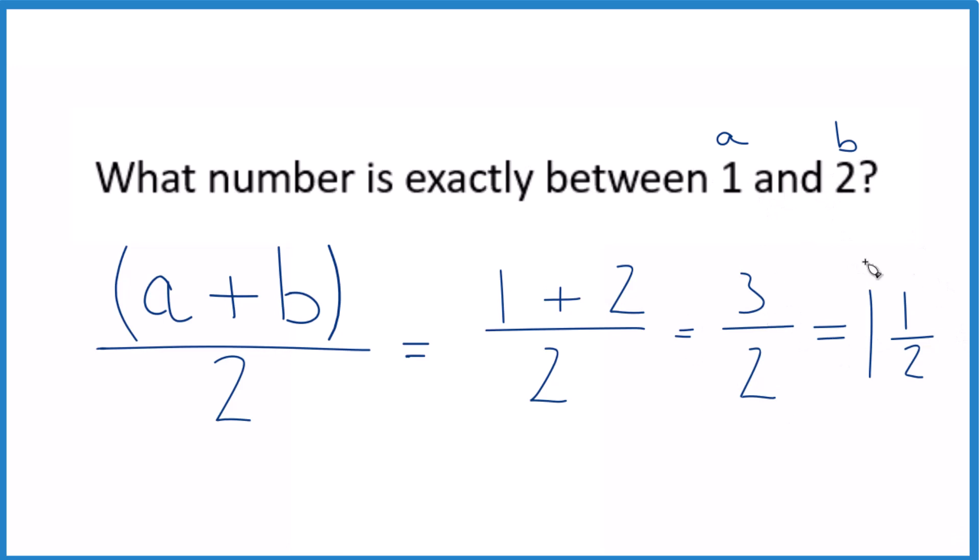And these two numbers, they're the same. If you took 1 times 2 plus 1, that gives you 3. And then we just keep the 2 the same there. So they're the same numbers.